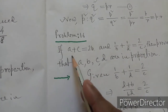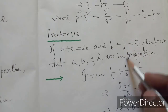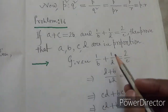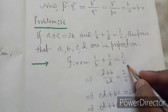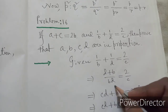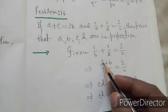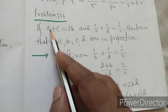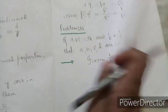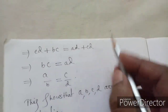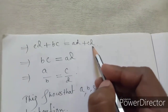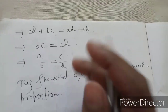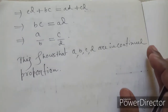Problem number 16: if a + c = 2b and 1/b + 1/d = 2/c, prove that a, b, c, d are in proportion. From 1/b + 1/d = 2/c, simplifying: (d + b)/(bd) = 2/c, so c(d + b) = 2bd. Substituting 2b = a + c: cd + bc = (a + c)d = ad + cd. The cd terms cancel, giving bc = ad, i.e., a/b = c/d. Therefore a, b, c, d are in proportion.